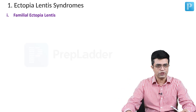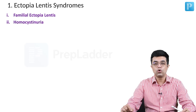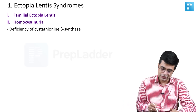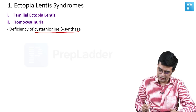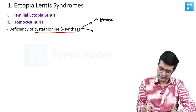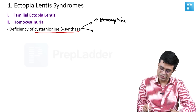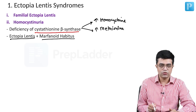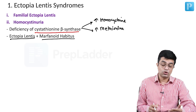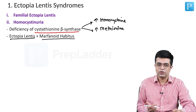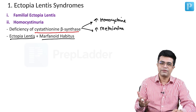The second ectopia lentis syndrome is homocystinuria. Homocystinuria is an inborn error of metabolism; there is deficiency of cystathionine beta-synthase, which leads to elevated levels of both homocysteine as well as methionine in the body. These patients develop ectopia lentis and are also found to have a marfanoid habitus — tall stature, thin body features, and arachnodactyly-like features.